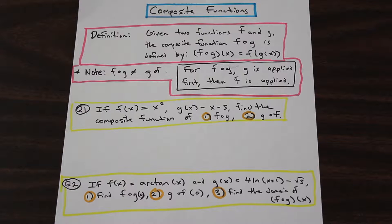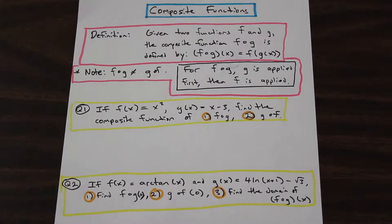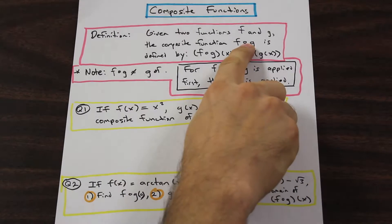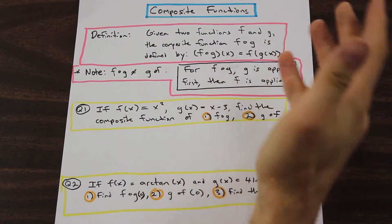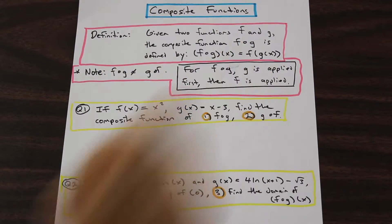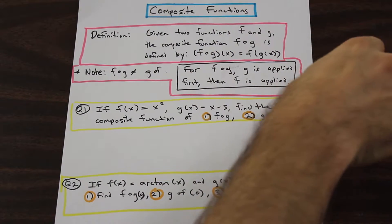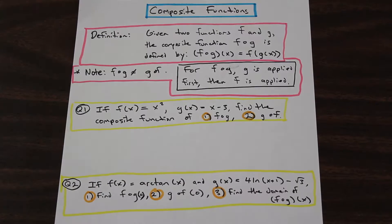A composite function essentially is two functions combined into each other. I've written a definition up here in pink, and it says: given two functions f and g, the composite function of f — there's a little circle there — so I'm just going to call it f of g, is defined by f of g of x equals f of g of x.